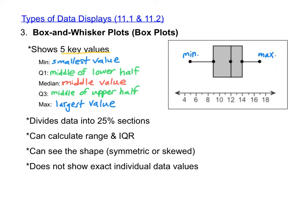The Q1 is the left edge of the box, so here Q1 would be here. And Q3 is the right edge of the box. The median is the line going through the box. I'm going to write in the values for each of these numbers. The minimum is at 5. Q1 is at 9. The median is at 12. Q3 is at 14. And the maximum is at 17.